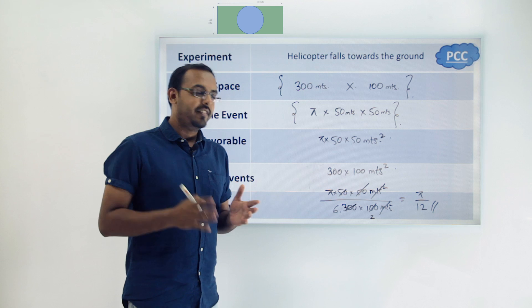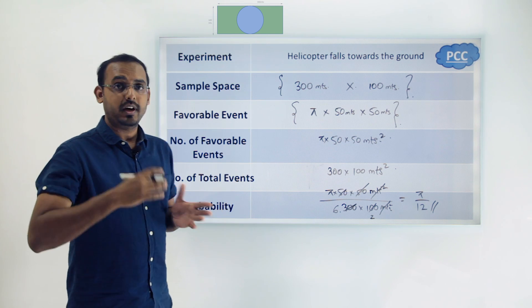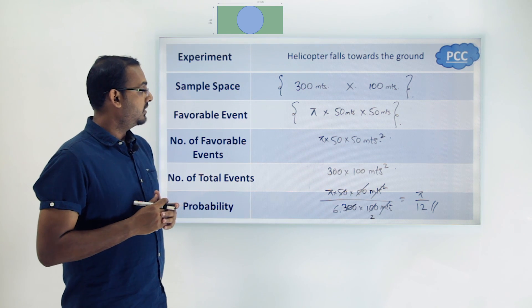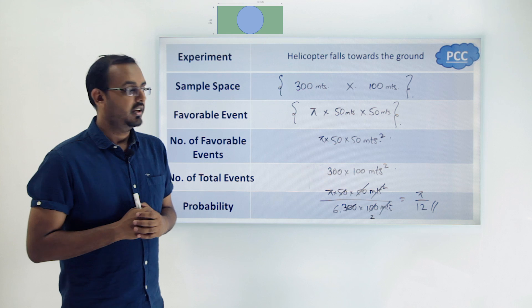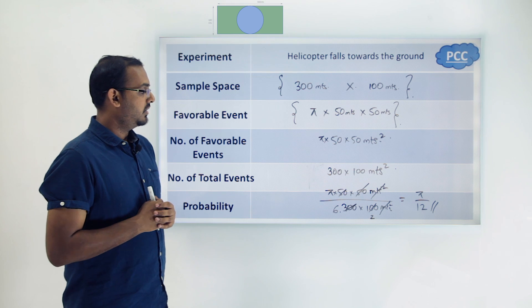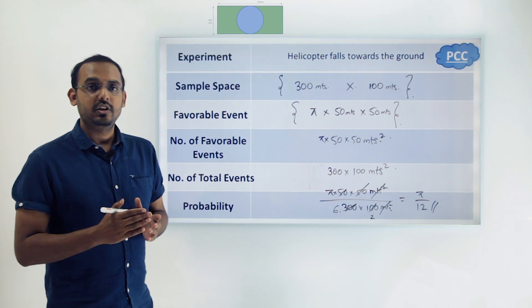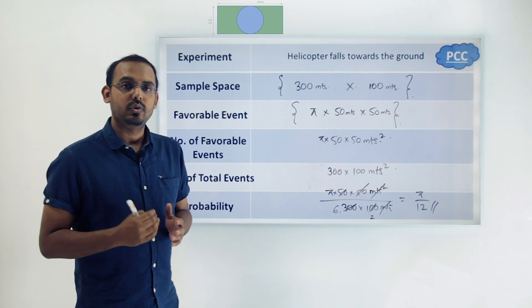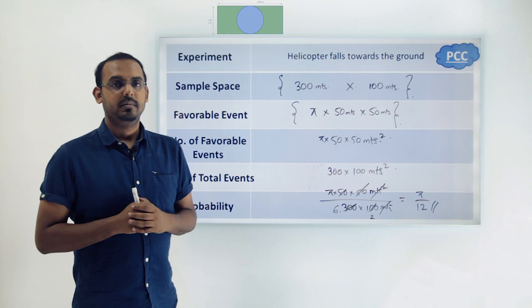This is a very interesting and new concept in probability — the concept of a continuous sample space, where we cannot count and calculate the complete sample space, so we use area to represent it instead.